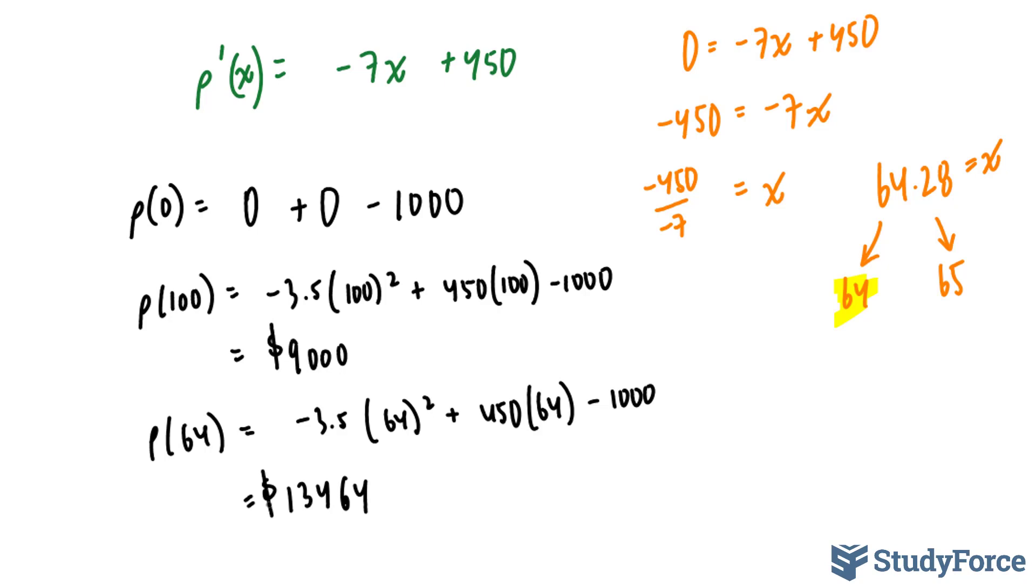So if we were to look at this on a graph, where this right here represents the number of devices and this represents profit. At 0, you've made -1,000. At 100, you would have made 9,000. And at 64, you would have made 13,464. So it would look like this. And that's proof that at 64 devices made, you'll make a maximum profit.